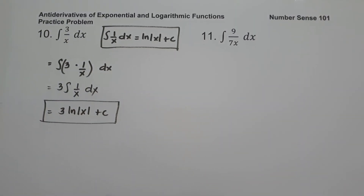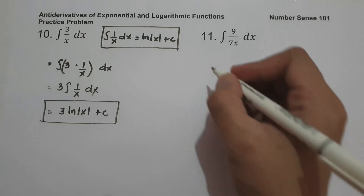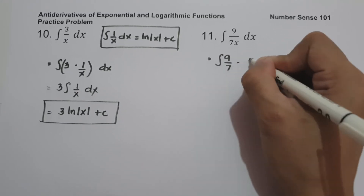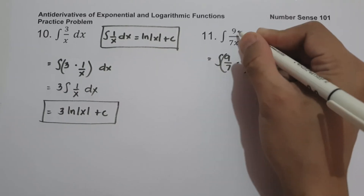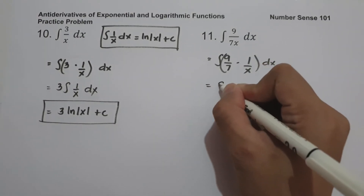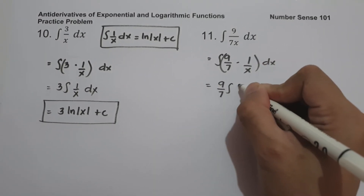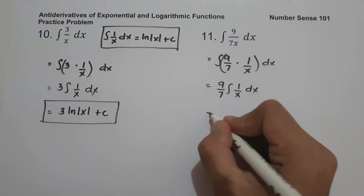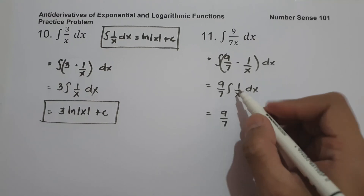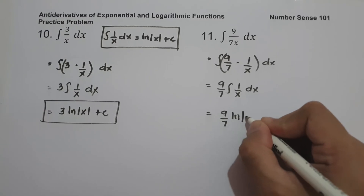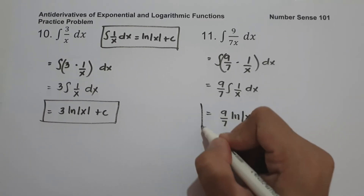On number eleven, what is the antiderivative of 9/(7x) dx? We rewrite this as (9/7) · (1/x), move the constant in front, giving (9/7) times the antiderivative of 1/x dx, which equals (9/7) ln|x| + c. That is our answer.